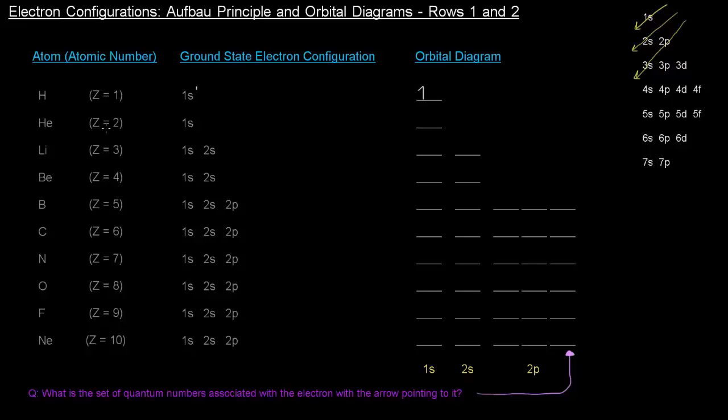Next up is helium. Z of two, so two electrons, so 1s2. So the 1s orbital will have one up and one down.